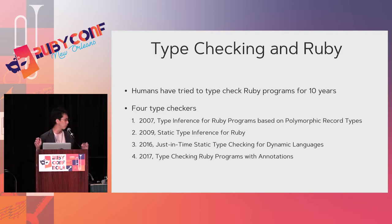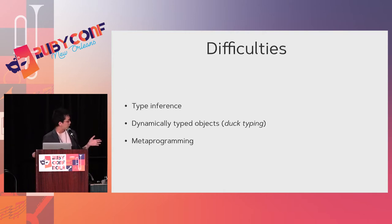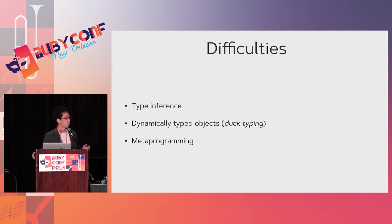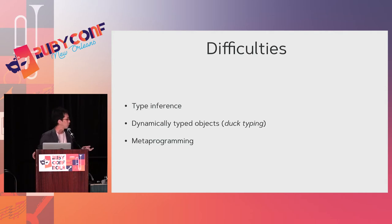The second generation supports metaprogramming. The difficulties for type checking Ruby programs include at least three challenges. The first is type inference. As you know, Ruby is a dynamically typed language, so there are no type annotations in your Ruby code. To check type consistency, it must first infer the types — how expressions and nodes in the program should be typed. The second difficulty is the semantics of Ruby's object typing, which I call dynamically typed objects, or duck typing.